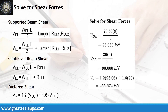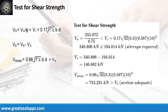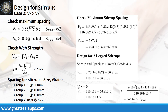The shear force from dead load is 93.06 kN and from live load is 90 kN, for a factored shear force of 255.672 kN. The nominal shear force is 340.896 kN, greater than the concrete capacity of 194.014 kN. Additional shear capacity from stirrups is 146.882 kN, less than the maximum stirrup capacity of 753.231 kN. The maximum stirrup spacing is 250mm. The web strength at the face of support is 110.161 kN, with initial spacing at 346.52mm.